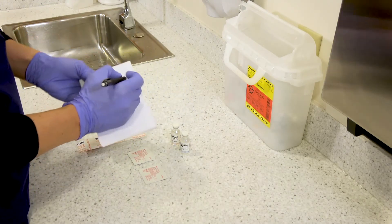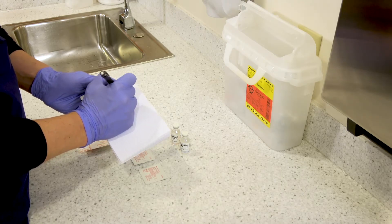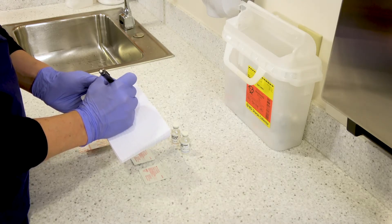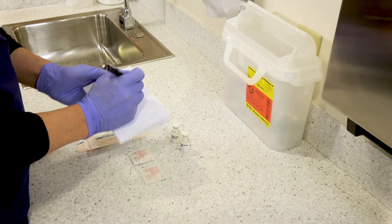So first step of course is to calculate the total required volume of medication needed. In this case we're going to use an example order of 10 units of NPH and 5 units of regular insulin. So that's 15 units total.